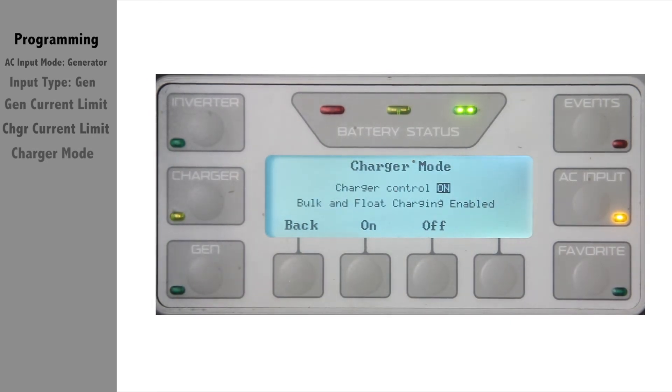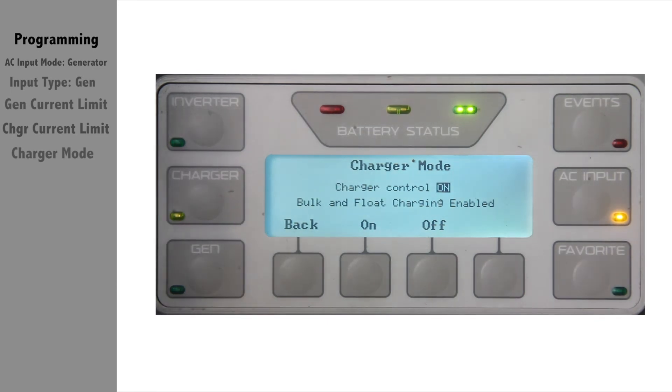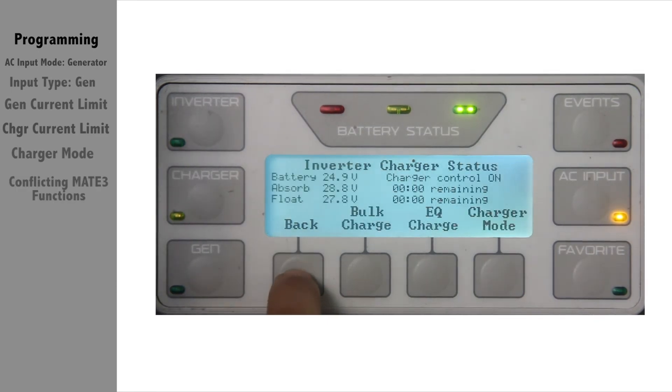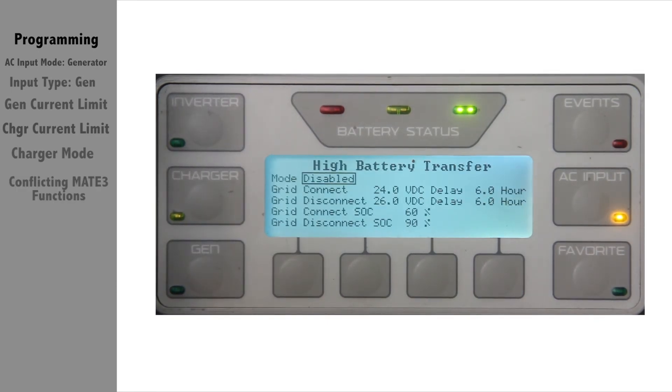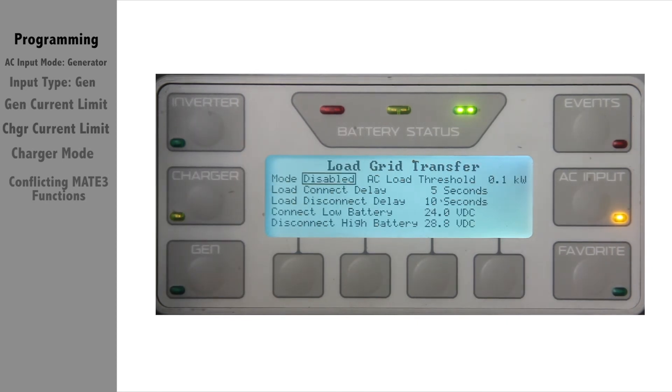As a last programming check, make sure you don't have any conflicting Mate 3 functions enabled such as HBX, grid use, or load grid transfer.